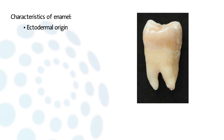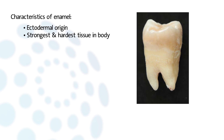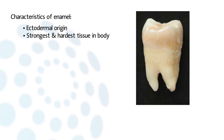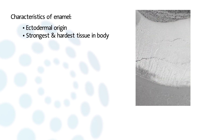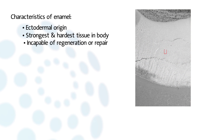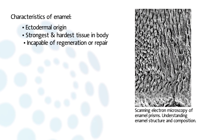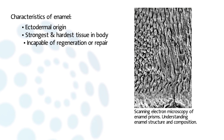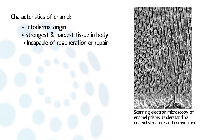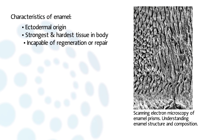Enamel is the only mineralized structure of the body with an ectodermal origin. It is the strongest and hardest tissue in the body and acts as an efficient barrier against environmental assaults — whether mechanical, chemical, or physical. Enamel is incapable of regeneration or repair, as ameloblasts, the specialized post-mitotic ectoderm-derived cells that produce the enamel matrix, disappear when the teeth erupt within the oral cavity.